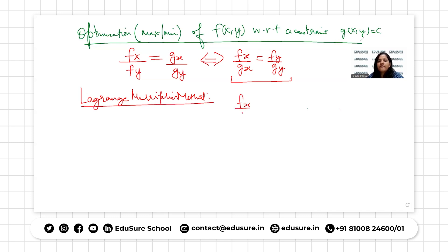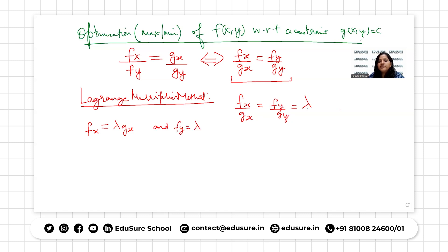Assume that the ratio fx divided by gx equals fy divided by gy equals lambda. Because these two are equal, we can assume they are equal to some constant lambda. That means fx equals lambda times gx, and fy equals lambda times gy. Equivalently, this means fx minus lambda times gx equals zero, and fy minus lambda times gy equals zero.